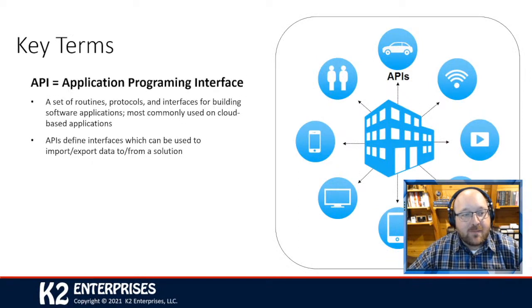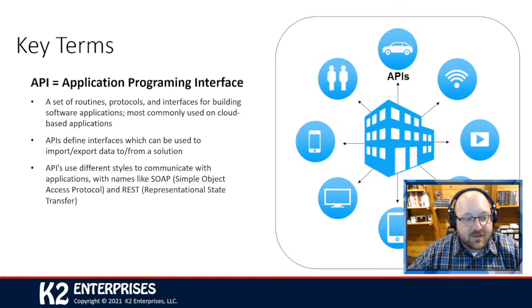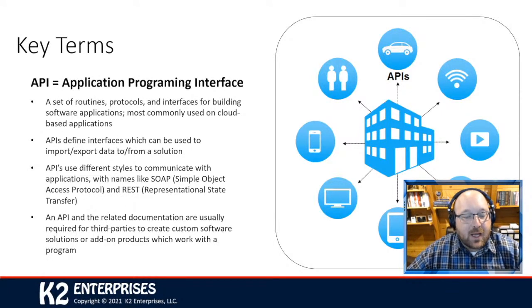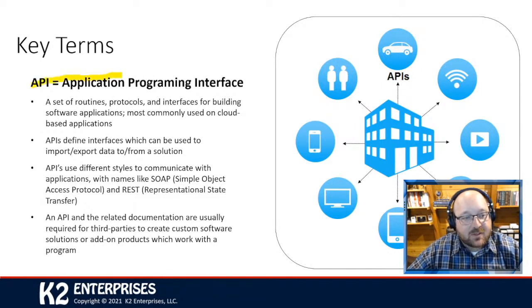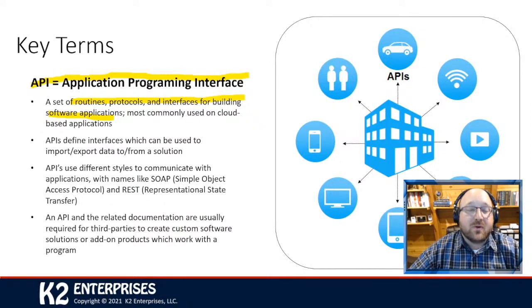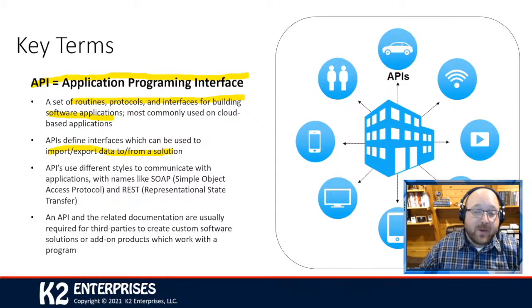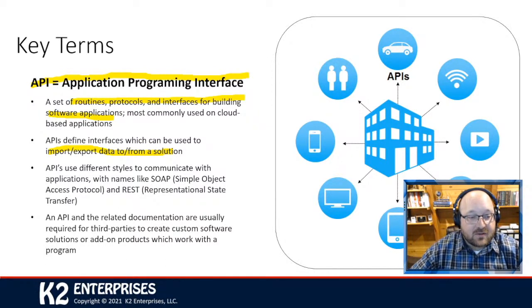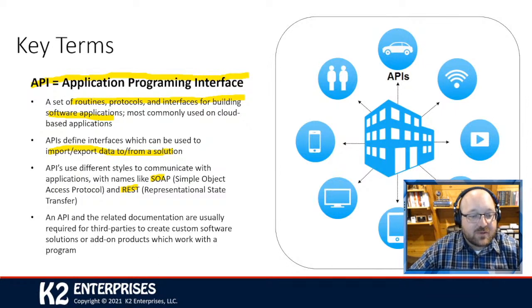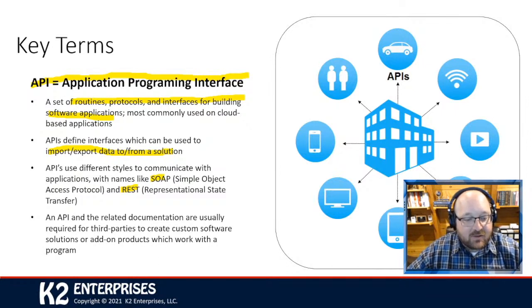We can also use APIs — Application Programming Interface. This is where I spend a lot of my time. Companies like Intuit, Sage, or Microsoft publish an API that allows us to do something — it's a set of routines, protocols, and interfaces for building software applications, allowing us to push and pull data to and from accounting, payroll, CRM, and more. The most common protocol is REST — Representational State Transfer — which allows us to build whatever type of solution we might want.